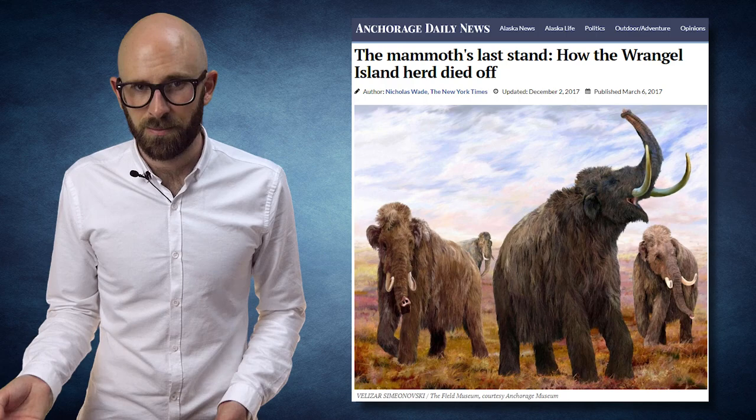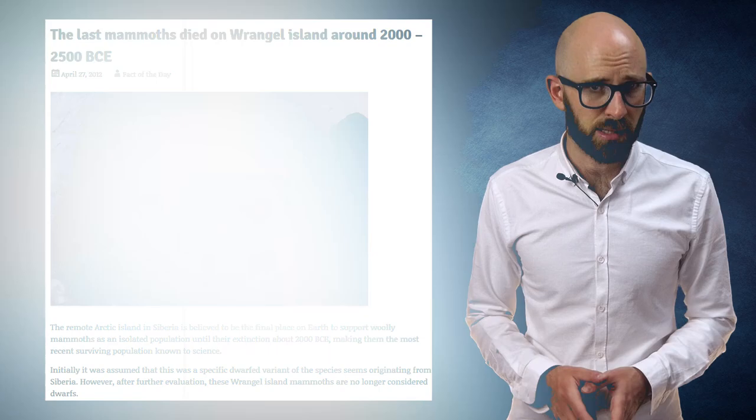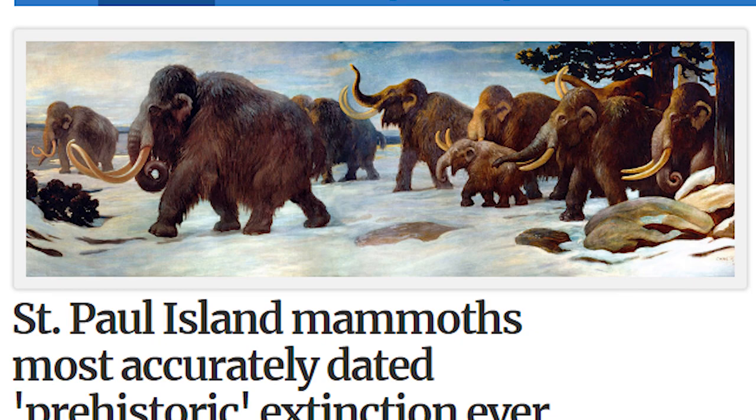Number 7: The St. Paul Island Mammoths Died A Horrible Death. The woolly mammoths of Wrangel Island weren't the only ones of their kind to temporarily escape the extinction of their species. Another lonely group of a few hundred animals survived, cut off from the mainland on St. Paul Island off the coast of Alaska.